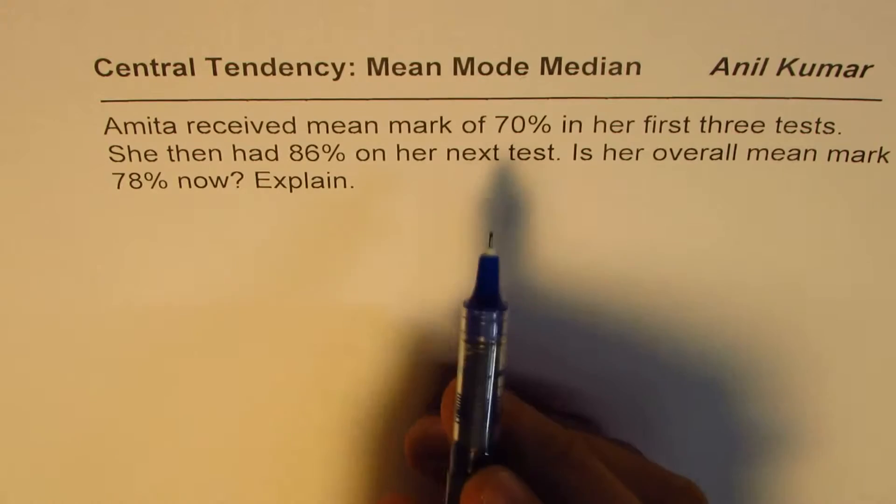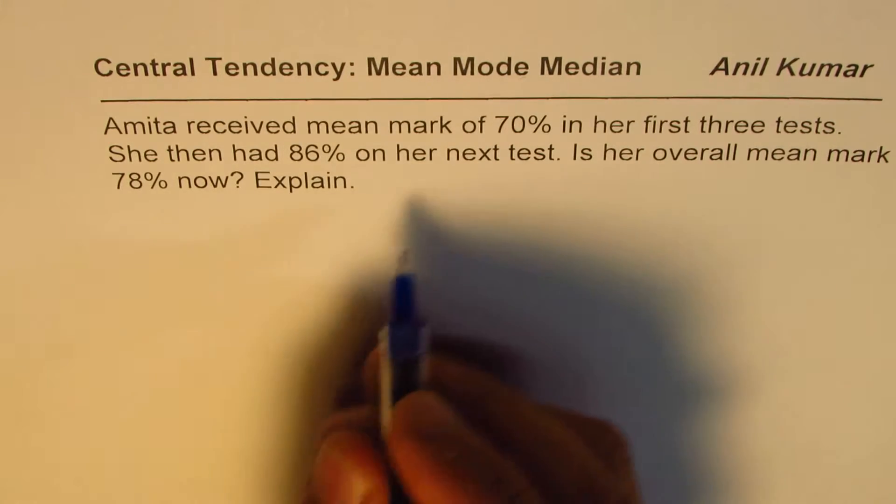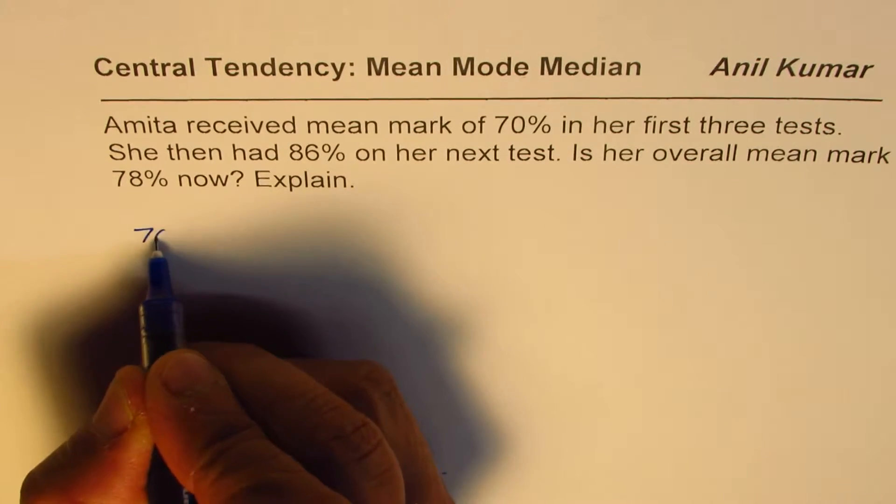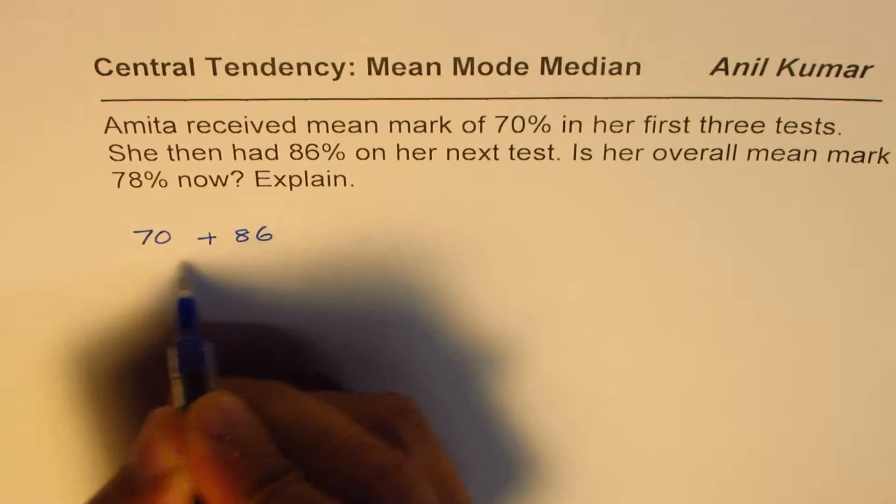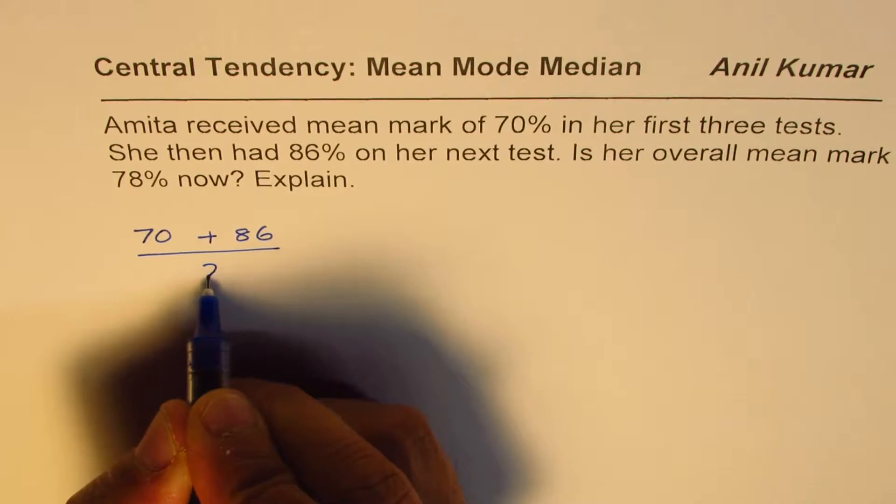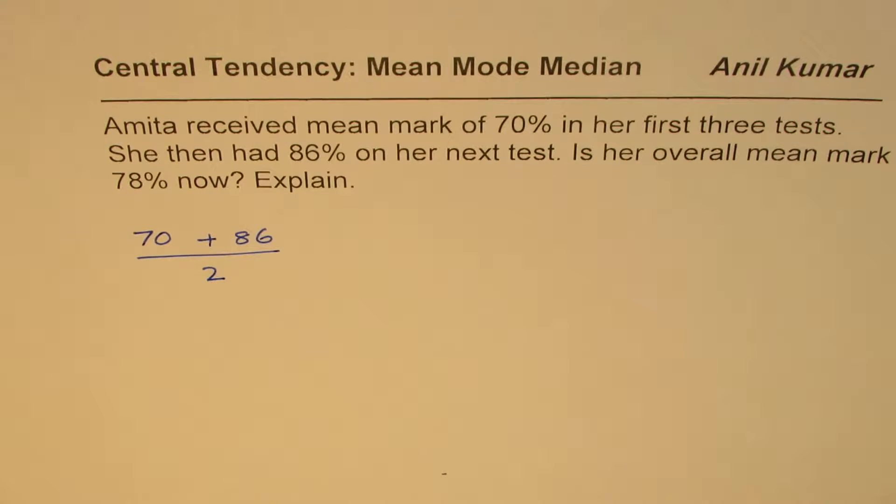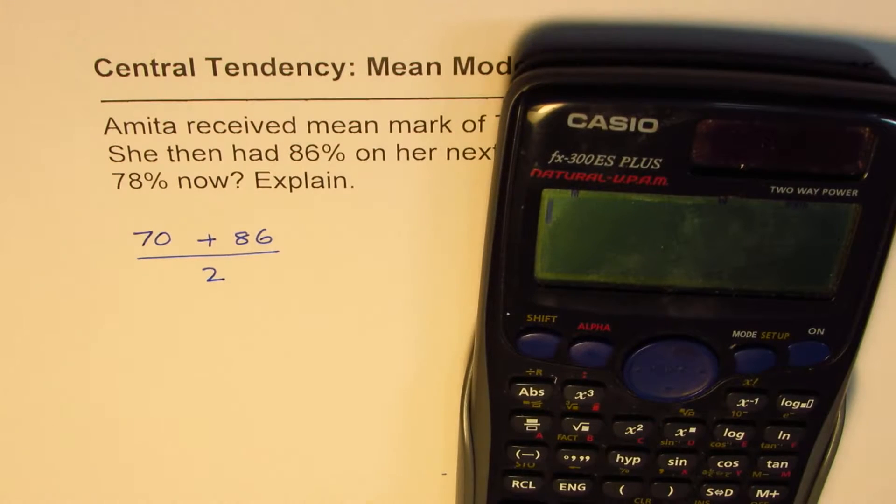Now if you do some calculations saying 70 plus 86 and divide by 2, then what do you get? Well let's check this. So we have 70 plus 86, that equals 156.